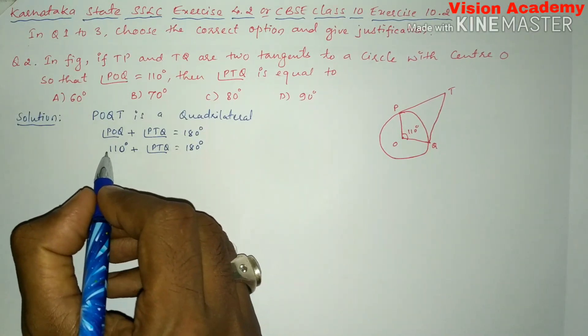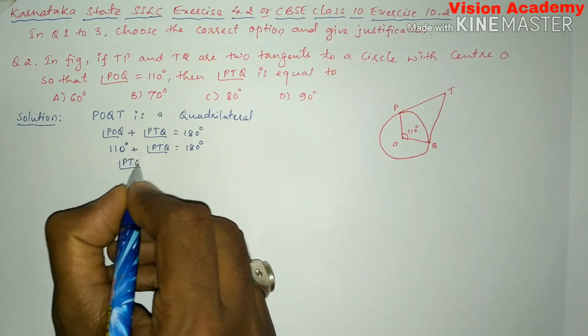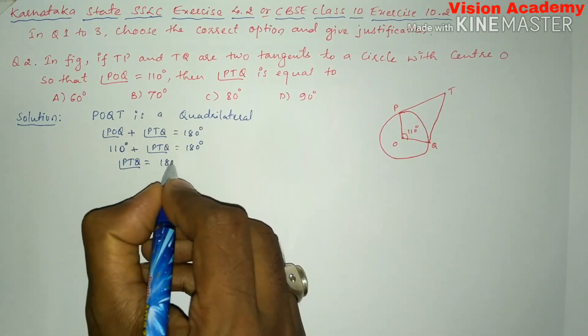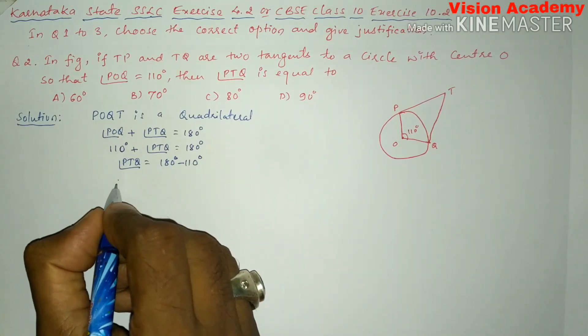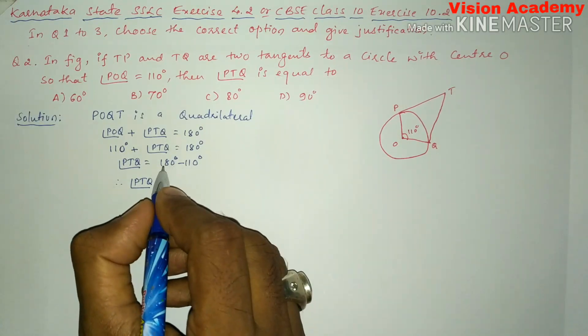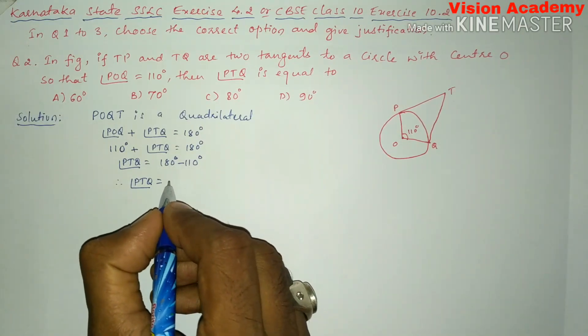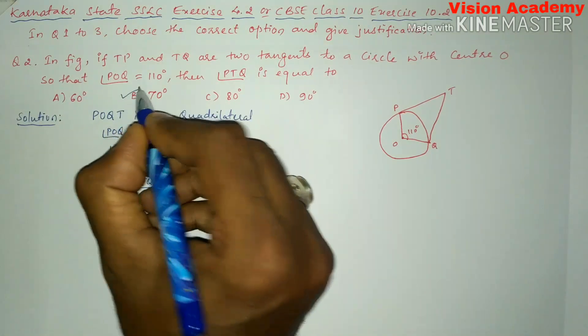Now transforming this 110 from LHS to RHS, it will become angle PTQ is equal to 180 degrees minus 110 degrees. Therefore angle PTQ equals 70 degrees. Here the correct option is B.